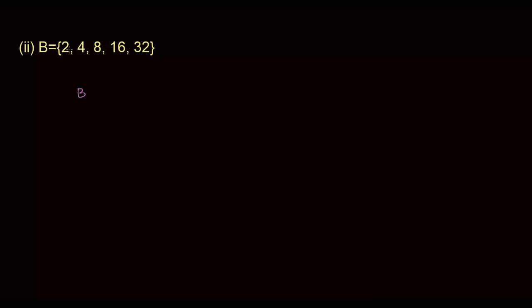One way of saying this is that the elements are 2n such that n is equal to 1, 2, 4, 8, and 16. That is one of the ways, and it's not wrong — that will do. But you should try to find out if there is something more to it.